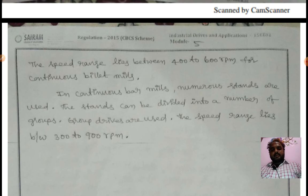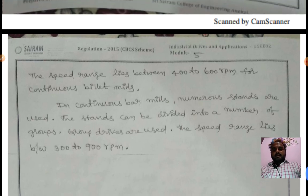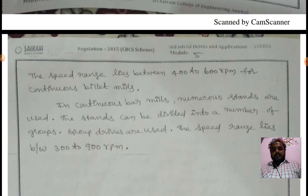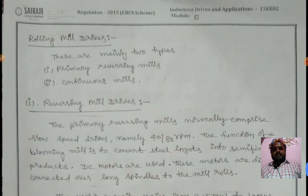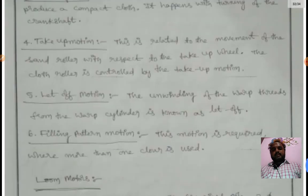Continuous bar mills are 300 to 900 RPM, but continuous billet mills are 400 to 600 RPM. You will use whichever is suitable for your application.